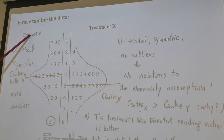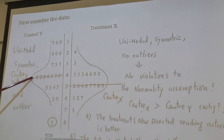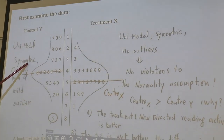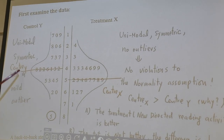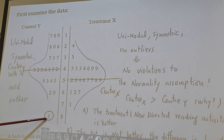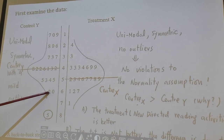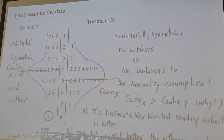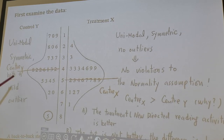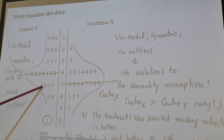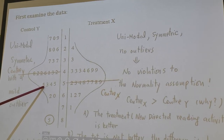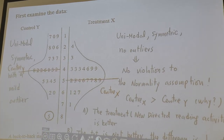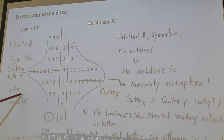Now look at this side — the data from the control group. You can say this is also unimodal, roughly symmetric, but there is one outlier. This outlier falls outside the overall pattern, but it's not that far away from the main group, so we call it a mild outlier — it's not very extreme. This does not constitute a serious violation to the normality assumption. For both sides, we don't see a strong violation to the normality assumption.